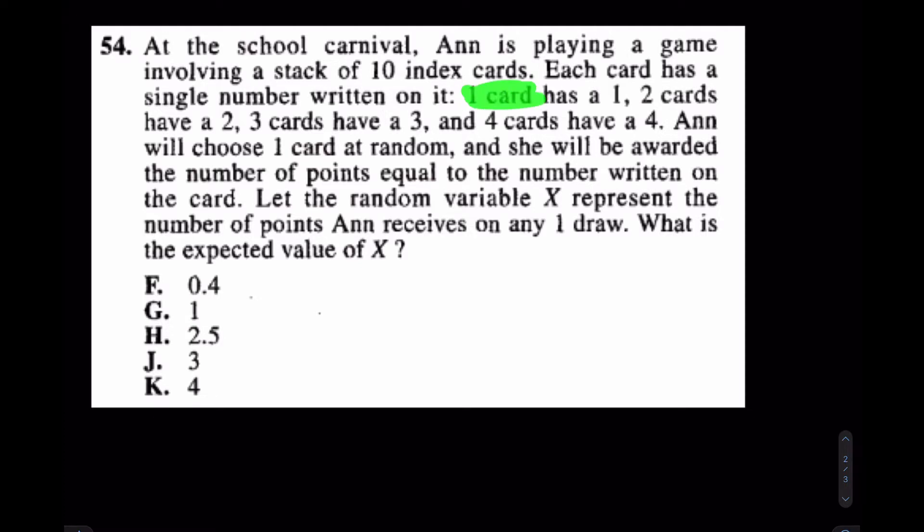Again, one of the cards has a one on it, two of the cards has a two on it, three of the ten cards has a three on it, and four of the ten cards has a four on it. Anne will choose one card at random, and she will be awarded the number of points equal to the number written on the card. Let the random variable X represent the number of points Ann received on any one draw. What is the expected value of X?